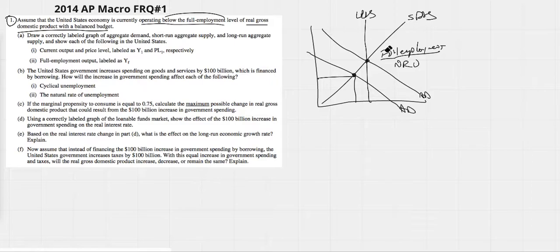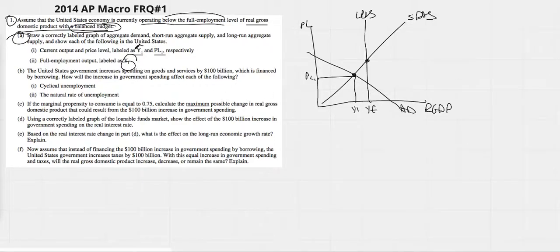We have a balanced budget. That might make some difference later on. Draw a correctly labeled graph, short-run, long-run. Y1, PL1. Don't forget your price level and your real GDP. This should be Y1, this should be YF. Full employment is YF, Y1, PL1.